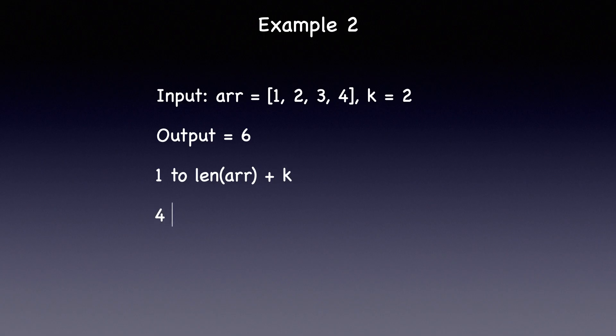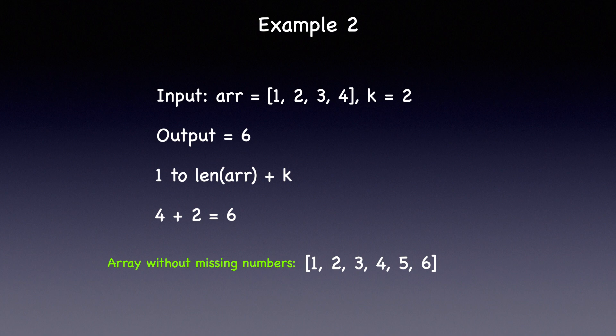In this instance, the array's length is 4 and k is equal to 2, making it a total of 6. Let's lay out the numbers from 1 to 6. The first missing number in the original array is 5 and the second missing number is 6, which is the answer. So let's now examine the code for this approach.